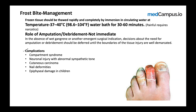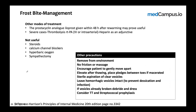Complications of frostbite include compartment syndrome, ongoing neuronal injury, and rarely cutaneous carcinoma, nail deformities, and epiphyseal damage in children. Apart from thawing and amputation, in severe cases thrombolysis can be tried. rTPA can be given either IV or intra-arterially, with adjunctive heparin. This is only for severe cases.